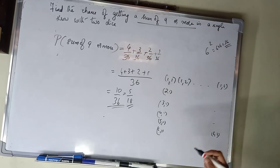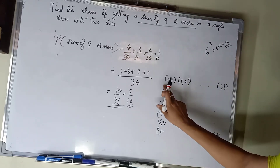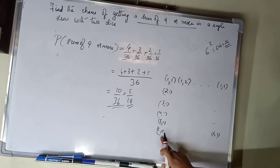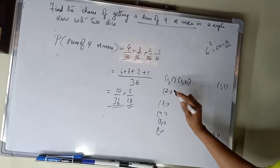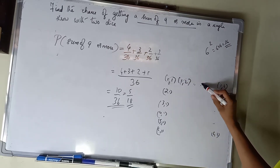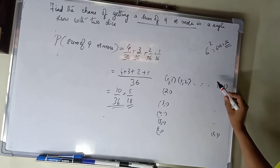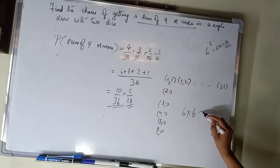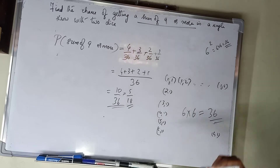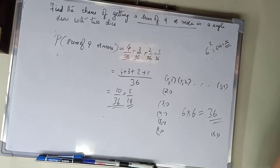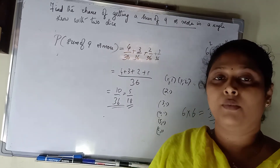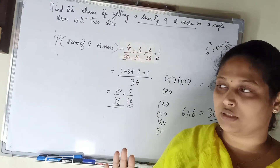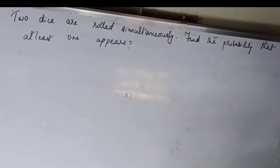Listing the pairs: (1,1), (1,2), (1,3), (1,4), (1,5), (1,6) and then (2,3), (2,4), and so on up to (6,1), (6,2), (6,3), (6,4), (6,5), (6,6). These are all 36 outcomes when 2 dice are rolled simultaneously.